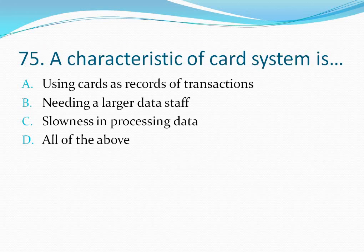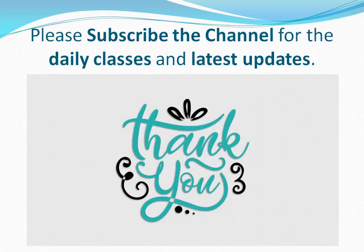Question number 75: A characteristic of a CART system is — option A using carts as records of transactions, option B needing a larger data staff, option C slowness in processing data, option D all of the above. The correct answer is option D — all of the above. That's all for today. Please subscribe to the channel for daily classes and latest updates. Thank you very much.